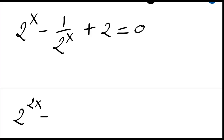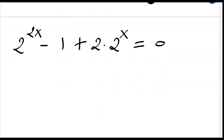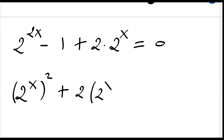...2x minus one plus two times 2 to the power x equal to zero. And if I rearrange my equation, I will have 2 to the power 2x plus two times 2 to the power x minus one equal to zero.